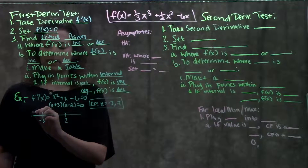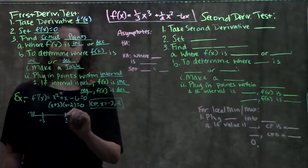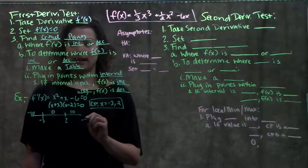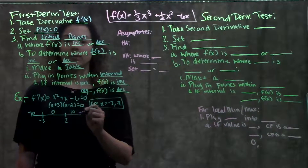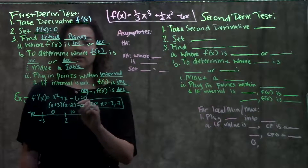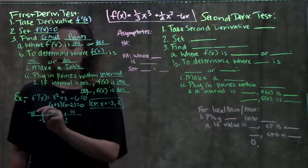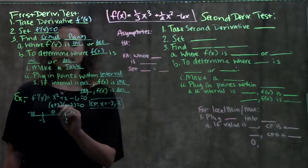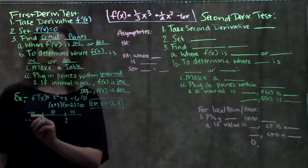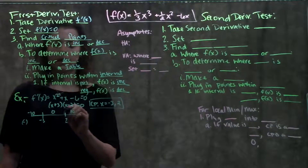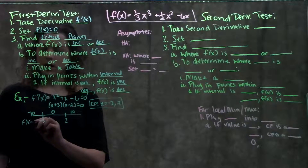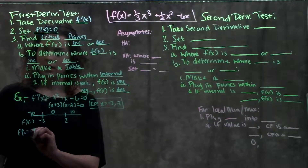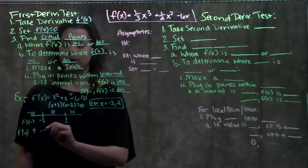In the leftmost interval I can plug in x equals negative 10, in the middle interval I can plug in 0, and on the right I can plug in positive 10. When I plug in these test points, I'm not worried about the actual value of my derivative — I'm only worried about the sign. Plugging negative 10 into the factored form, I get negative 10 plus 3, which is negative, times negative 10 minus 2, also negative. Negative times negative gives me a positive, so f prime of x is positive in this interval.